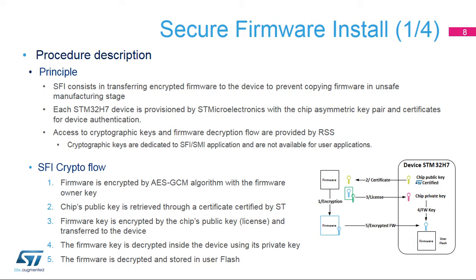The main RSS service is the Secure Firmware Install, or SFI. SFI is used to securely transfer firmware to the device in an unsafe manufacturing stage, protecting firmware against copy and overproduction by cryptographic algorithms. Each STM32H7 device is provisioned by STMicroelectronics with chip asymmetric key pairs and certificates for device authentication and firmware confidentiality. The device's private key is embedded in the secure system flash and only the ST RSS service can access it.